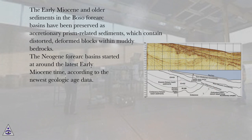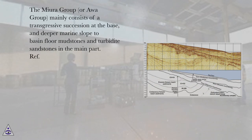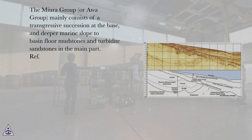The Neogene Forearc Basins started at around the latest early Miocene time, according to the newest geologic age data. The Miura Group, or AWA Group, mainly consists of a transgressive succession at the base, and deeper marine slope to basin floor mudstones and turbidite sandstones in the main part.